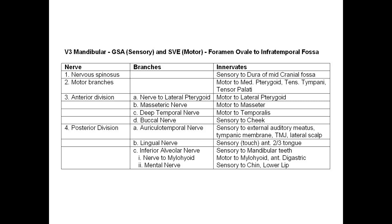The posterior division has: the auriculotemporal nerve, sensory to the external auditory meatus, tympanic membrane, the TMJ (temporomandibular joint), lateral scalp; the lingual nerve, sensory for touch to the anterior two-thirds of the tongue; and the inferior alveolar nerve, which has the nerve to mylohyoid and the mental nerve. The inferior alveolar nerve is sensory to the mandibular teeth, and motor to the mylohyoid and anterior belly of the digastric. The mental nerve is sensory to the chin and lower lip.